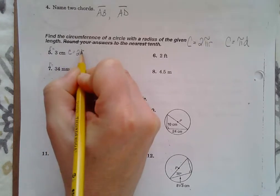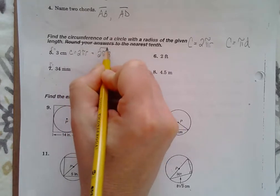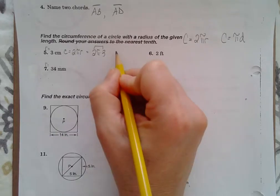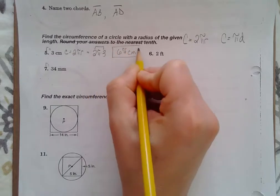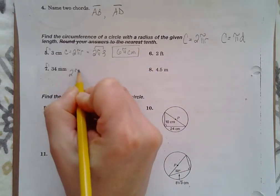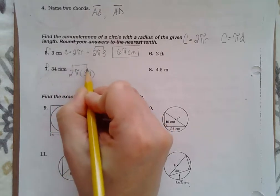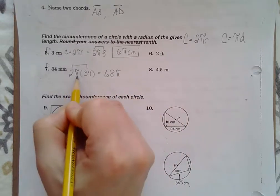Circumference is equal to 2πR. 2 times π times 3. Remember, you can multiply your numbers. The order for multiplying doesn't matter. 6π centimeters. 2 times π times 34. 2 times 34 is 68π millimeters.